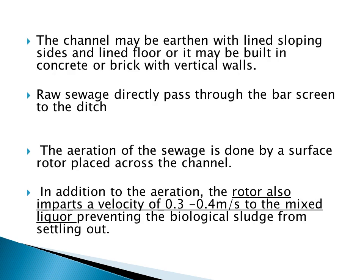The open channel is an earthen channel with side slopes, and the floor is also lined using concrete or brick with vertical walls. Raw sewage can be directly passed through the oxidation ditch by first passing it through bar screens, because the sewage may consist of larger particles and floating objects. In order to prevent the entry of those objects into the oxidation ditch, we use a bar screen.